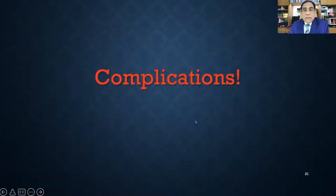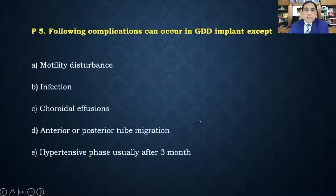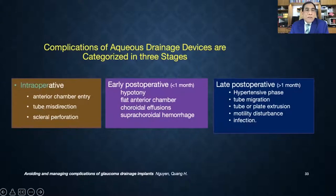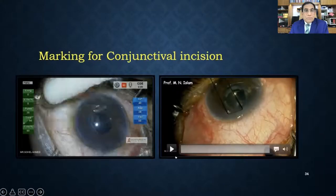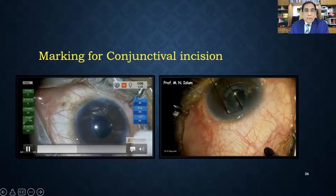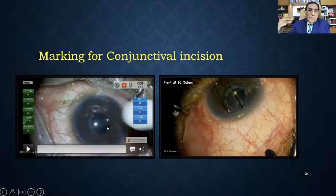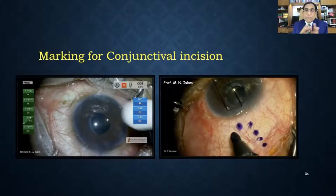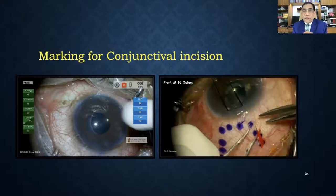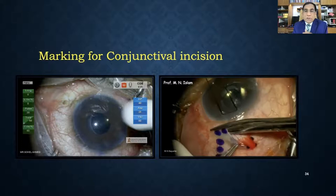Regarding complications: every surgery has them. Common ones include motility disturbance, infection, corneal edema, endoposterior tube positioning, migration, and hypertensive phase — which usually occurs after three months. I will discuss intraoperative, early postoperative, and late postoperative complications. Marking the conjunctiva is important: if you do not mark, you may make the peritomy in the wrong location, causing unwanted resection.